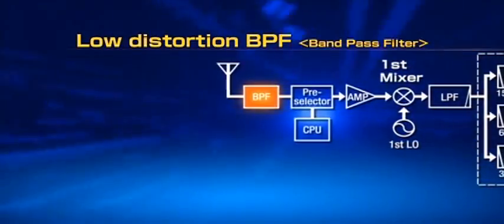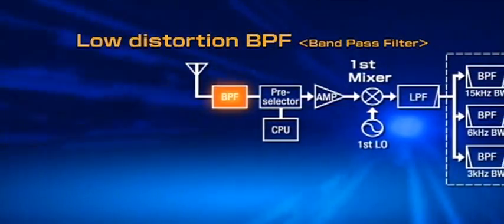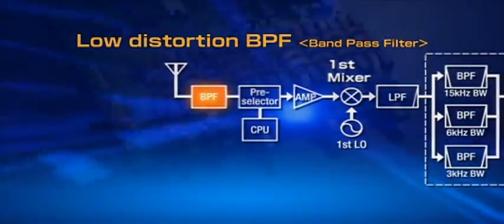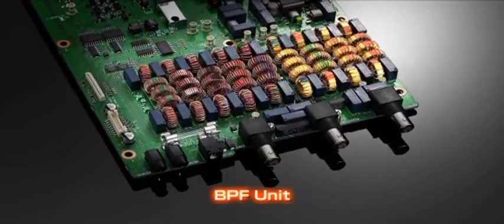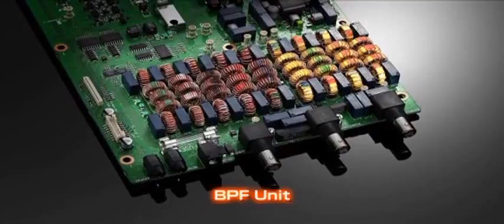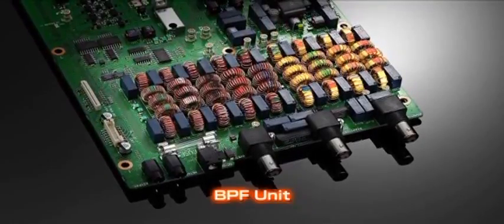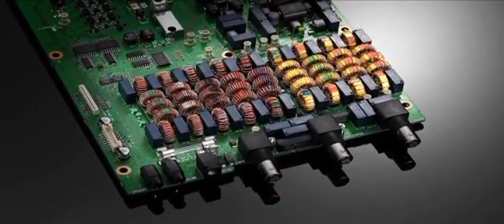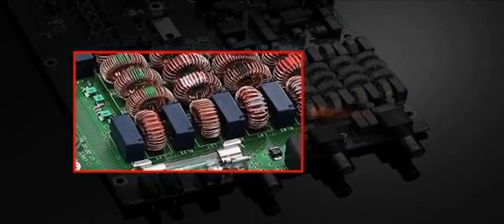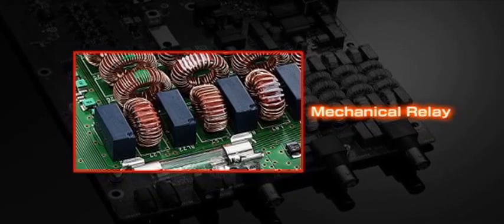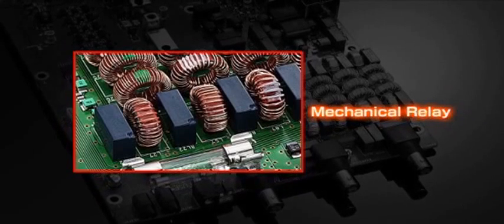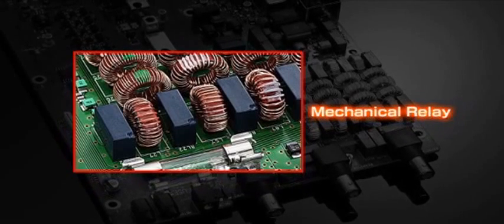To eliminate as much distortion as possible, the use of semiconductors has been reduced to the absolute minimum in the high amplitude switching circuit. The IC7700 also uses large coil condensers in the filter structure. Mechanical relays and large toroidal conductors which are resistant to magnetic saturation are also used to prevent distortion before the input of the bandpass filter and provide superior linearity.